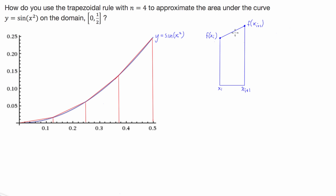When functions come into play, the length of one of these sides is going to be the function at a particular x value — in this case x_i. So to get the area, we find the average of the two heights: we add the function at the first x to the function at the second x and divide by 2, giving us f(x_i) plus f(x_{i+1}), divided by 2.